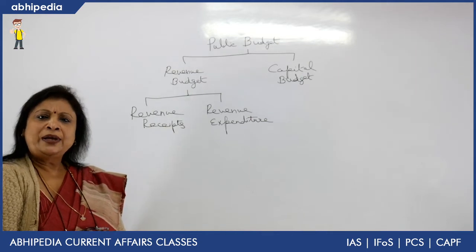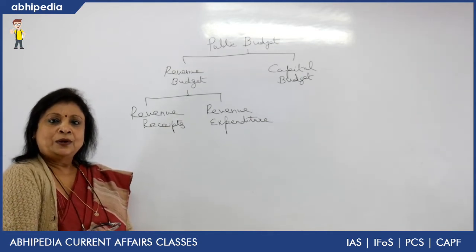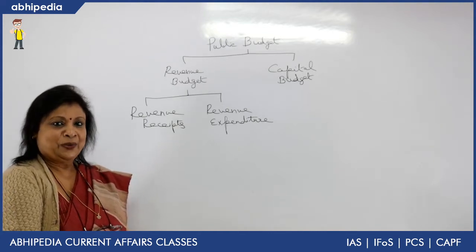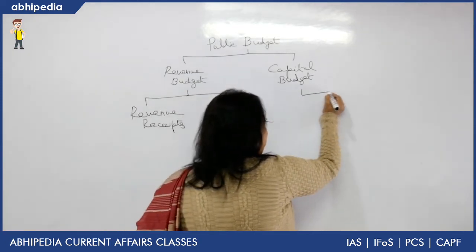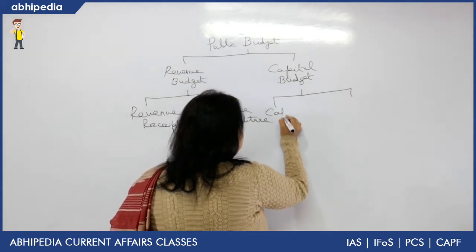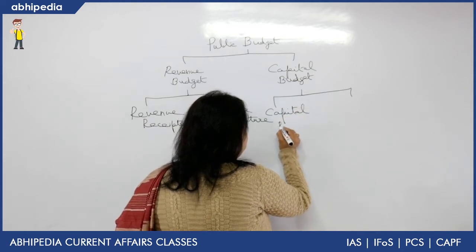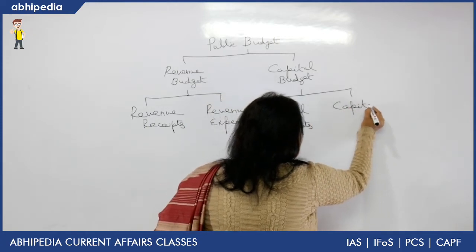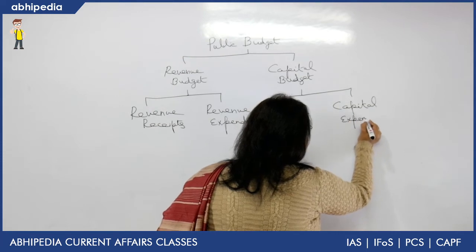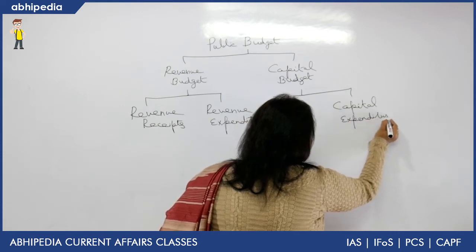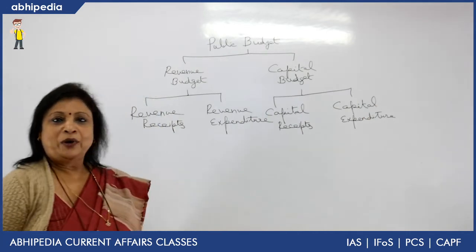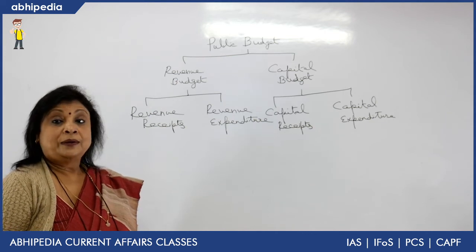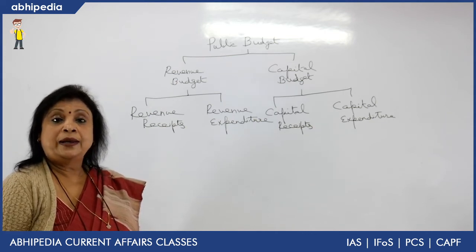Revenue expenditure consists of routine expenditure on salaries, defence, and all such routine items. So revenue budget represents routine income and routine expenditure of the government. As for capital budget, we again have capital receipts and capital expenditure. Capital budget, as already mentioned, creates an asset for the government and also causes reduction in the liability of the government.